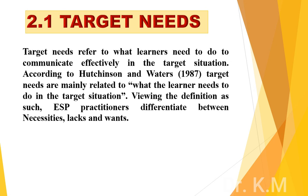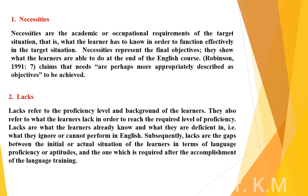According to Hutchinson and Waters (1987), target needs are mainly related to what the learner needs to do in the target situation. ESP practitioners differentiate between necessities, lacks, and wants. Necessities are the academic or occupational requirements of the target situation — that is, what the learner has to know in order to function effectively in the target situation. Necessities represent the final objectives; they show what learners are able to do at the end of the English course. Robinson (1991, p.7) claims that needs are perhaps more appropriately described as objectives to be achieved.